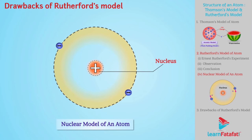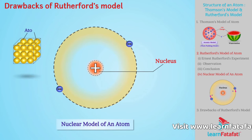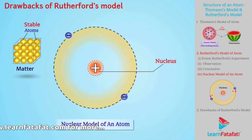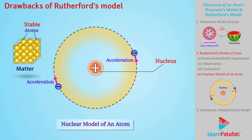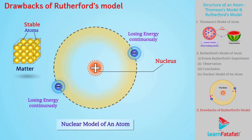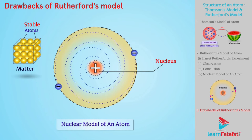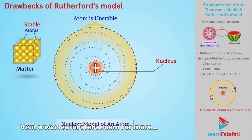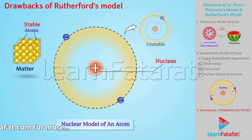Drawbacks of Rutherford's model: atoms in matter are stable. However, according to Rutherford's model, electrons revolve around the nucleus in a circular path. Charged electrons in motion have acceleration, and hence they radiate energy constantly in the form of waves. While revolving, electrons must be losing energy continuously. Due to this loss of energy, the radius of revolution must decrease, and finally electrons should fall into the nucleus — suggesting that the atom is unstable. However, this does not happen, and Rutherford's model failed to explain the reason behind it.